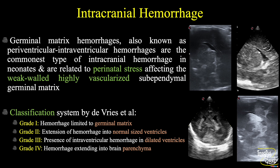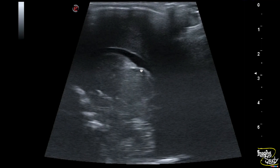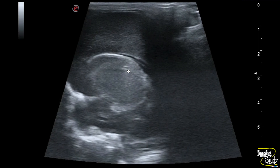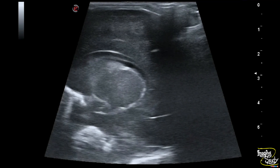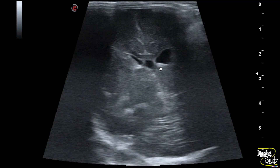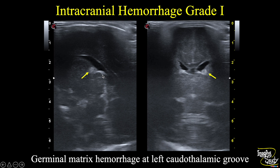Let's jump into our first case. This is a 9-days-old neonate with preterm delivery at 29 weeks, low birth weight of 1.1 kg and respiratory distress syndrome. On sagittal section, you can see this area is the chordothalamic groove. There is a bright hyperechoic area at this chordothalamic groove. This echogenic focus is the hemorrhage at the germinal matrix, indicating it as a case of grade 1 intracranial hemorrhage. On coronal section, you can also see this hyperechoic focus at the left chordothalamic groove, again indicating grade 1 intracranial hemorrhage.